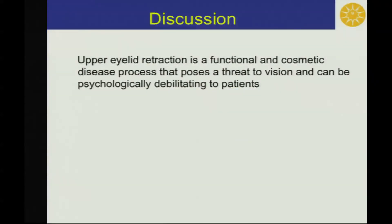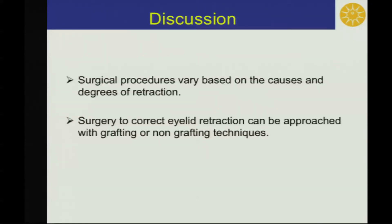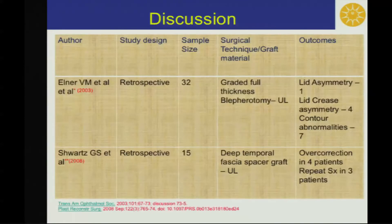Upper eyelid retraction is a functional and cosmetic disease process that poses a threat to vision and can be psychologically debilitating to patients. Surgical procedures may vary based on the causes and degree of retraction, and surgery to correct lid retraction can be approached with grafting or non-grafting techniques.